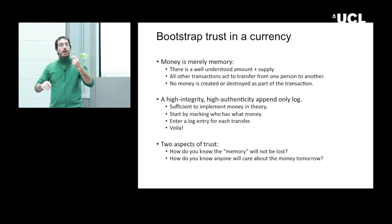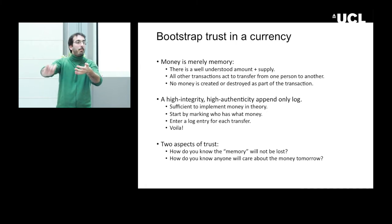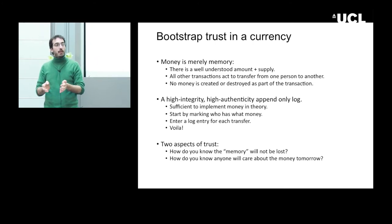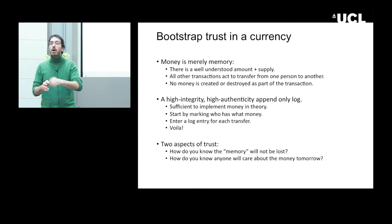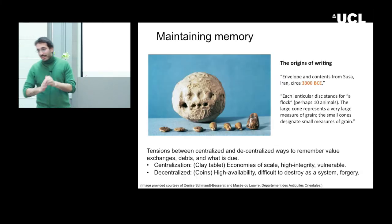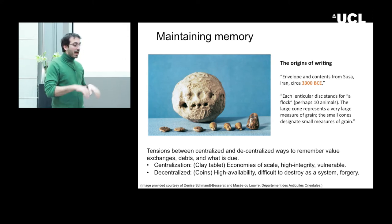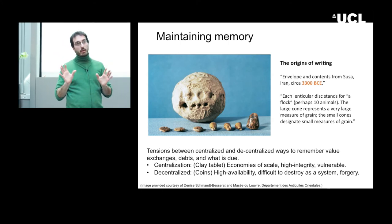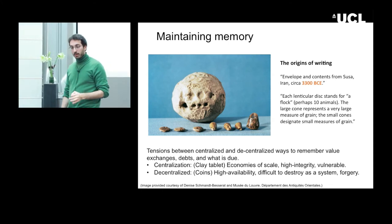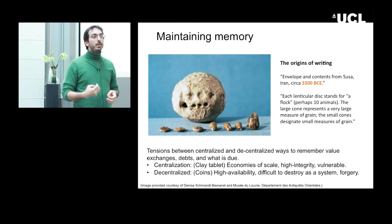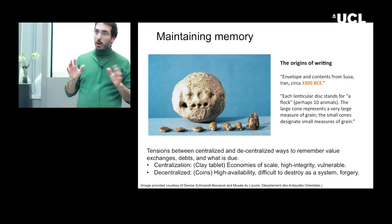The second aspect is: how do you know that when you write things in this append-only log, when you look at them tomorrow with someone else, they will actually recognize you have some value and should give you their fish for it? It turns out this append-only log problem is at the source of our civilization — not just a side thing cryptographers are trying to build. This is a foundational piece of human civilization as a whole. Here is an accounting mechanism from old Mesopotamia.